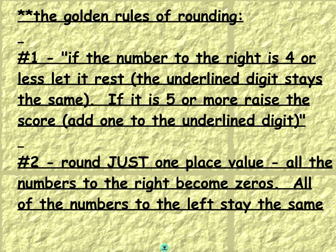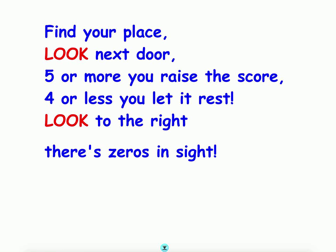Here is our poem: Find your place, look next door — five or more, you raise the score; four or less, you let it rest. Look to the right, there's zeros in sight. This is a good tool to help us remember the steps of rounding.